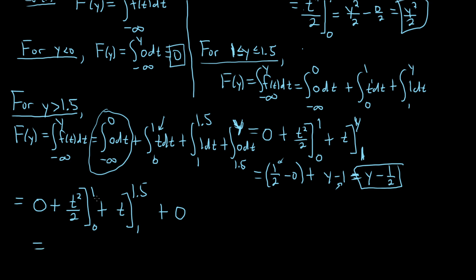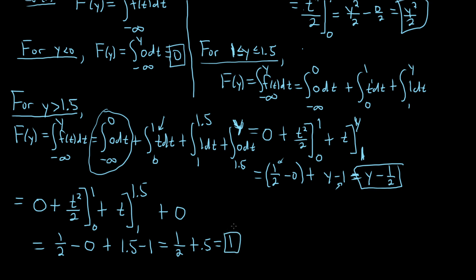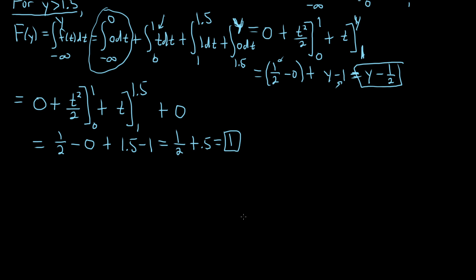Evaluating: t squared over 2 from 0 to 1 gives one half. Then t from 1 to 1.5 gives 1.5 minus 1 equals 0.5. So one half plus 0.5 equals 1. For y greater than 1.5, F(y) = 1.